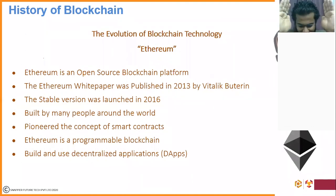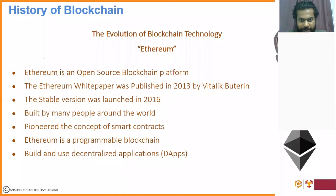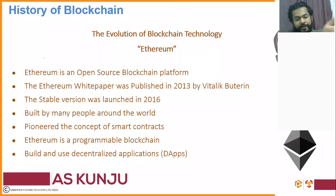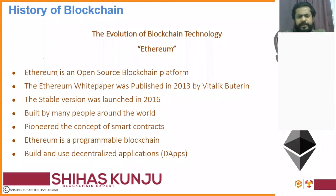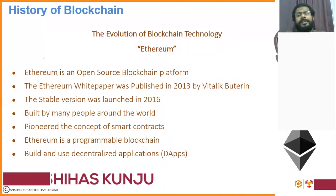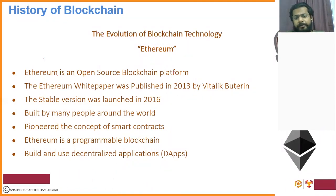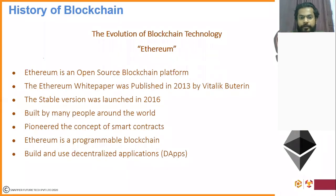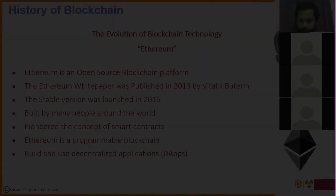So now you understand how Bitcoin came into existence because of blockchain technology, and blockchain technology came into existence because of Bitcoin. After that, Ethereum introduced a programmable blockchain — not limited to only cryptocurrency, you are able to develop applications based on blockchain technology, and that was enabled because of the Ethereum platform.